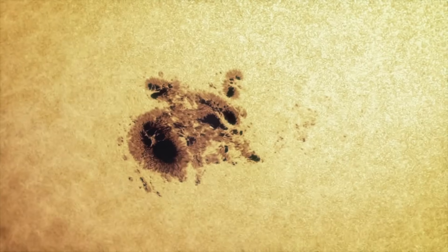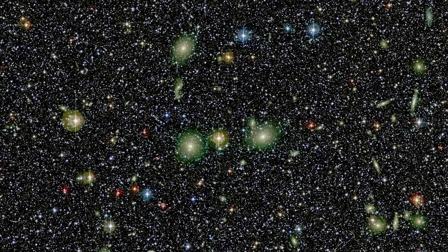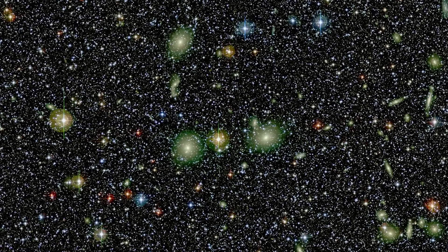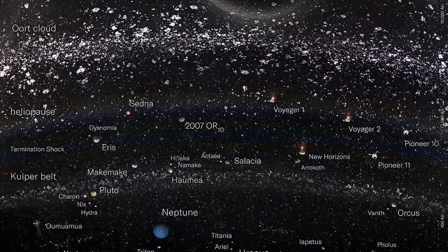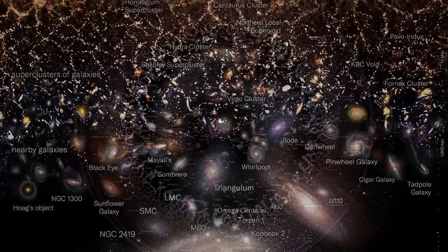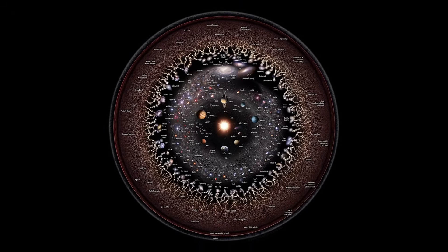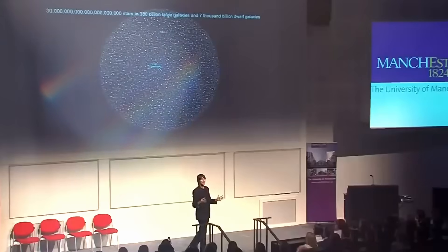This is the number of stars that are in the observable universe at the moment. 30,000 million, million, million stars. Just like our sun, some bigger, some smaller. 350 billion large galaxies, 7,000 billion smaller dwarf galaxies. That's the observable bit of the universe. We have pretty strong evidence now the universe is significantly bigger than that, but we can just see this blob surrounding us, the blob from which light has had chance to travel during the history of the universe.